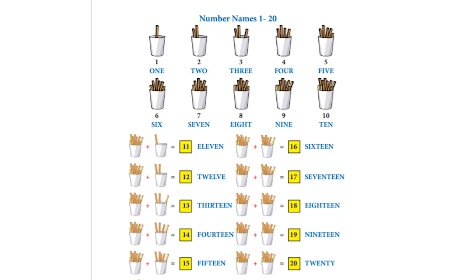Six is S-I-X, seven is S-E-V-E-N, eight is E-I-G-H-T, nine is N-I-N-E, and ten is T-E-N. Now let's do eleven: E-L-E-V-E-N. Twelve: T-W-E-L-V-E. Thirteen: T-H-I-R-T-E-E-N. Fourteen: F-O-U-R-T-E-E-N. Fifteen: F-I-F-T-E-E-N.